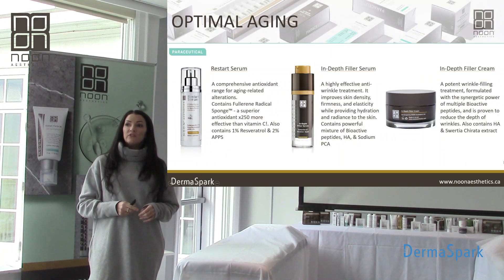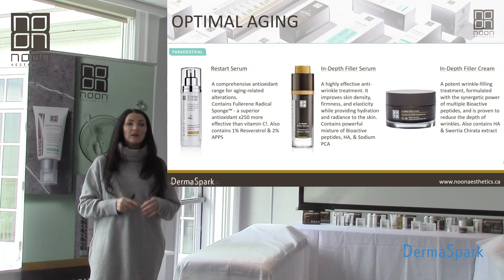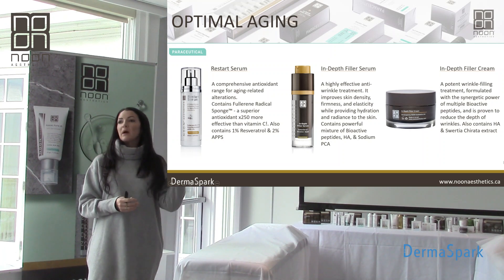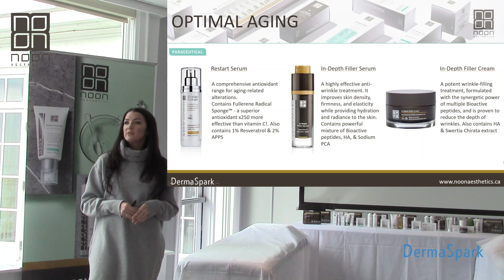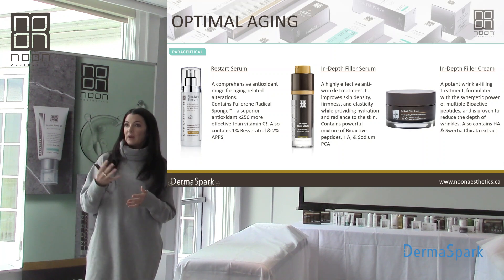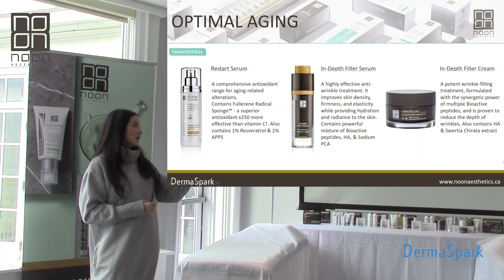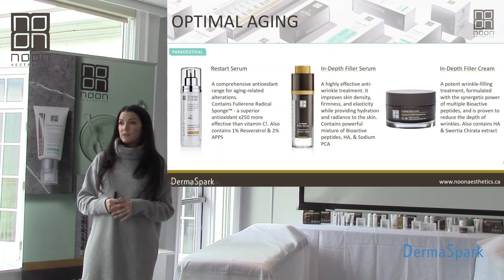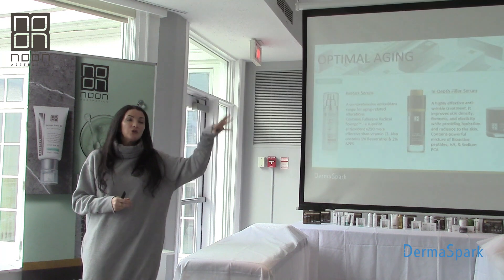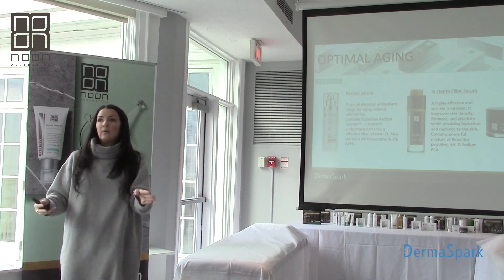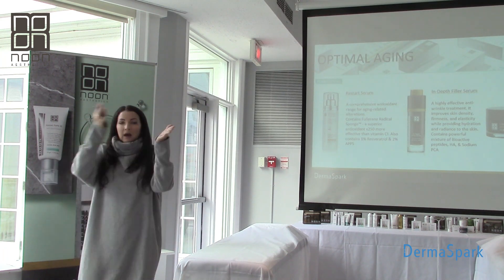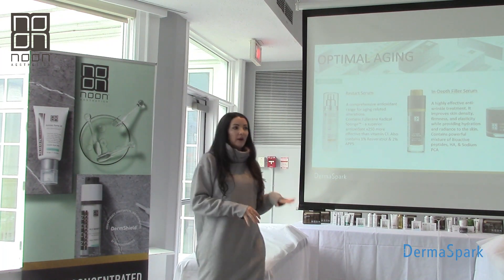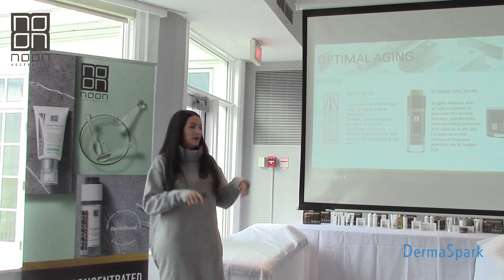You can potentially use both peels in sequence. If treating aggressive melasma, you could do a three-minute G-peel followed by a five-minute P-peel if the patient can handle that — but neutralize and rinse between them; don't layer them directly. I would only do this after a patient has seen me at least three times. They're not meant to work synergistically layered on top of each other; they work independently.